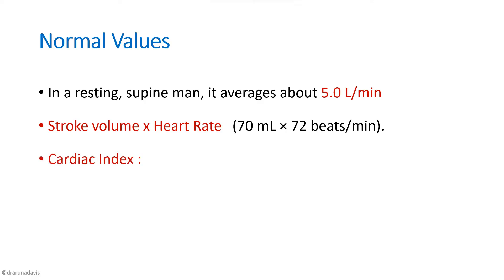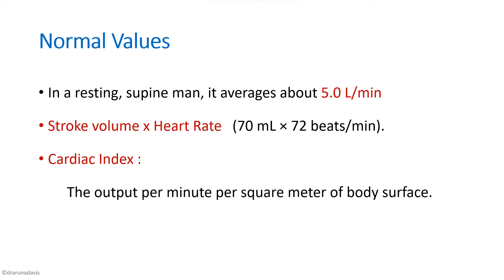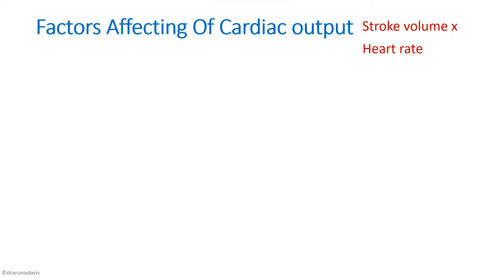There is another term called cardiac index, which is the output per minute per square meter of body surface area. The normal value for cardiac index is 3.2 liters per minute per meter squared. After that introduction, you can write about the factors affecting cardiac output, which depend on stroke volume and heart rate.